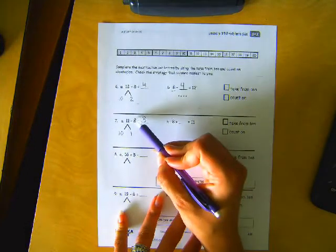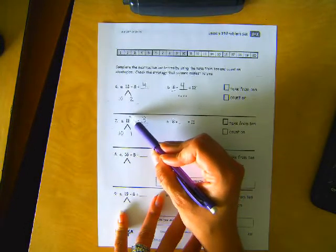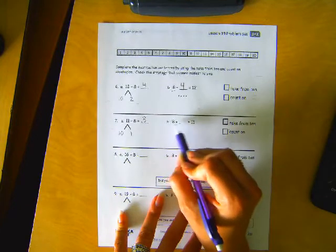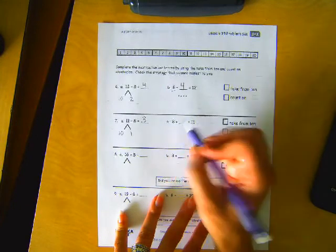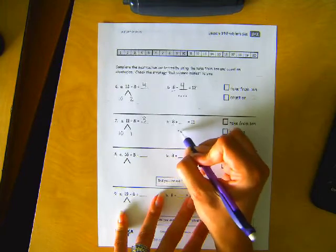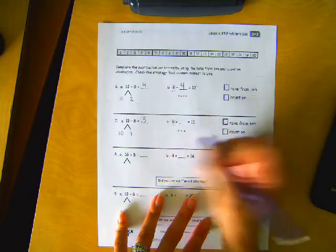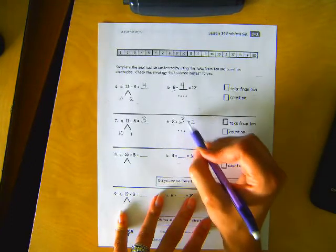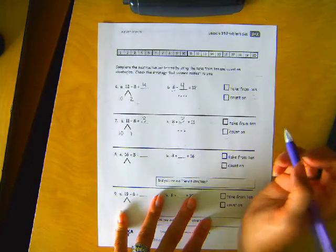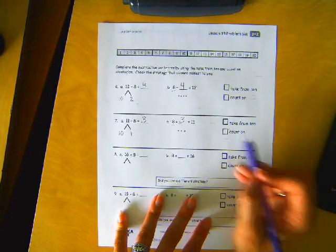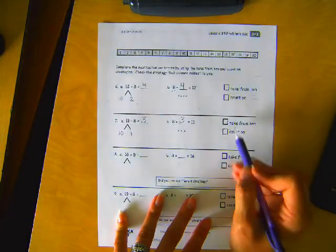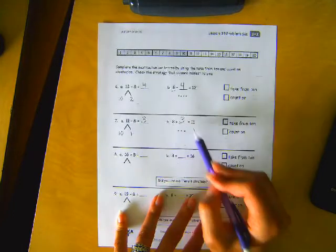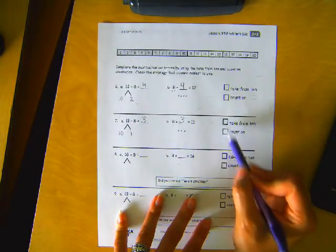Or we could count from 8 and count on to 11. So that's what B is telling us. 8 plus blank equals 11. So we would have 8, 9, 10, 11. So it took 3. 8 plus 3 equals 11. Choose your strategy that you thought was easiest. Was the take from 10 strategy easier for you? Or the counting on strategy easier for you? Check which one was easiest.